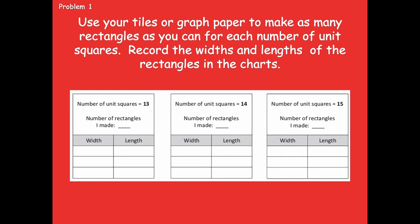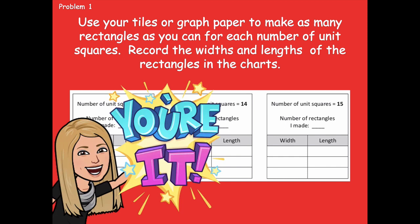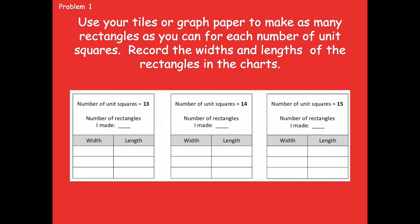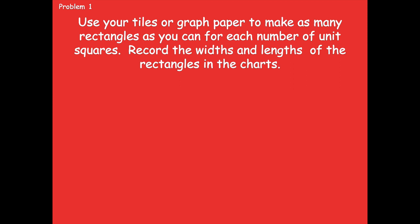We're going to do the first three — for 13, 14, and 15 squares — then check in and do the other three next. Pause the video, make some rectangles, fill in your charts, and click play when you're ready to go over the first three together. For 13, I only came up with one rectangle: 1 by 13. For 14, I have 1 by 14 and 2 by 7 — only two rectangles. And for 15, I have a 1 by 15 and a 3 by 5 — two rectangles for those.